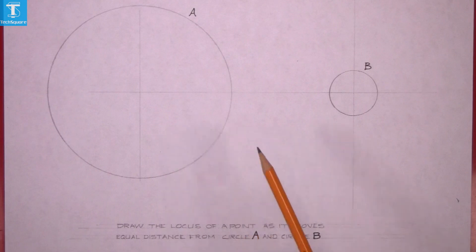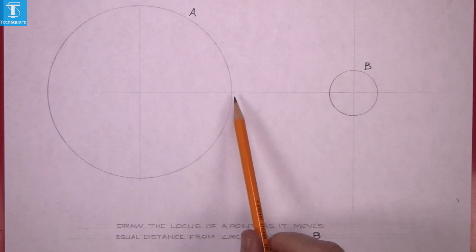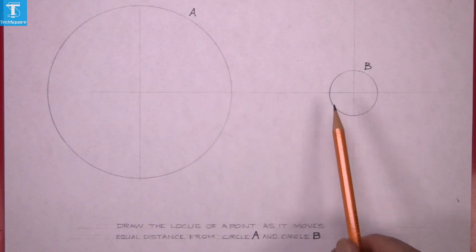So we have circle A here and circle B here and equal distance from one curve to the other.